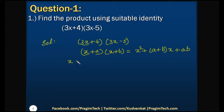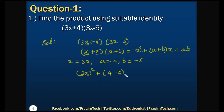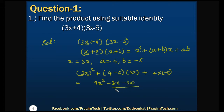In place of x we have 3x, in place of a it is 4, and b is -5. Applying the identity, it will be (3x)² + (4 + (-5))(3x) + (4)(-5), which gives 9x² - 3x - 20. This is the product of the given two terms.